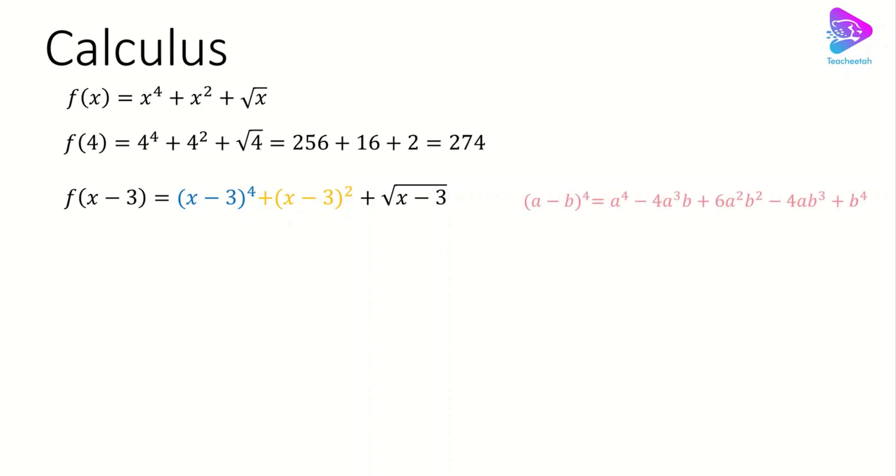So for (x minus 3) to the power of 4, we will have (a minus b) to the power of 4 for the first term, and we have to use this algebraic equation. Therefore we will have x to the power of 4 minus 4x cubed plus 6x squared minus 4x plus... For the second term which is (x minus 3) squared, we have to use this algebraic equation.